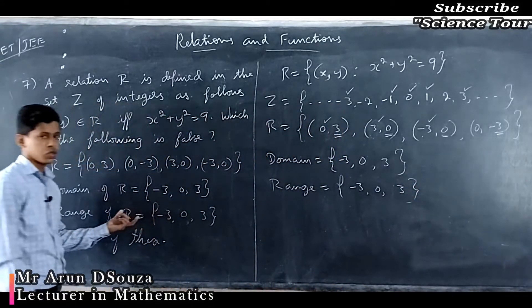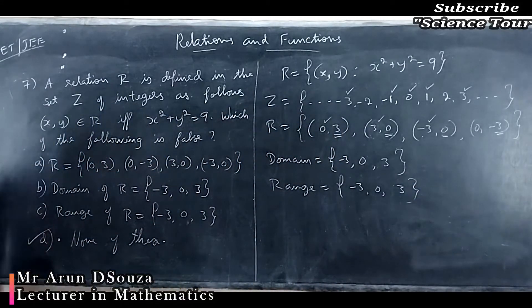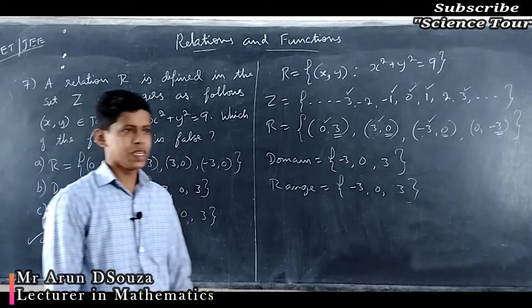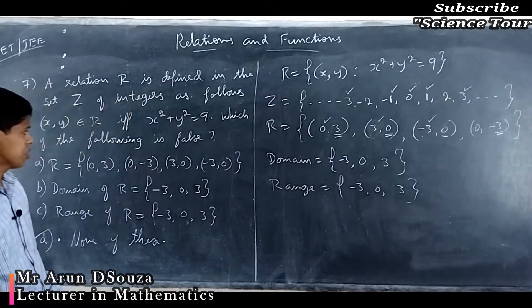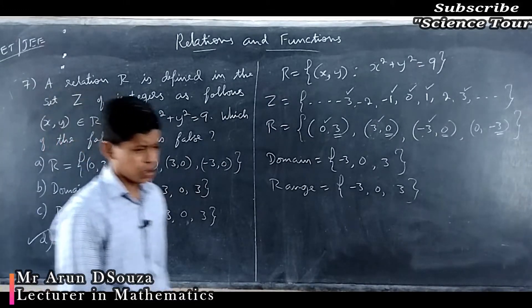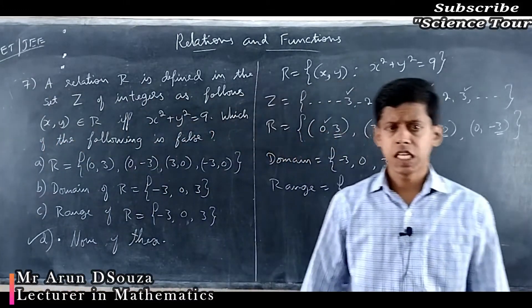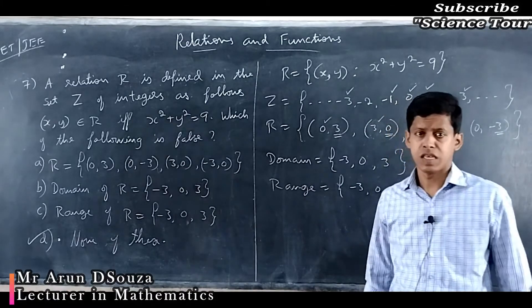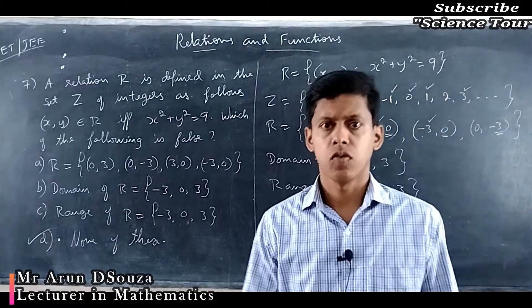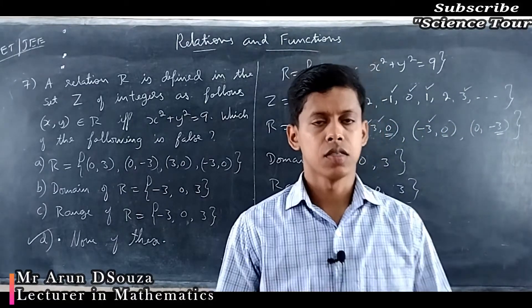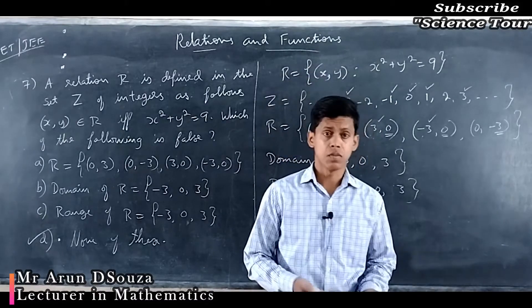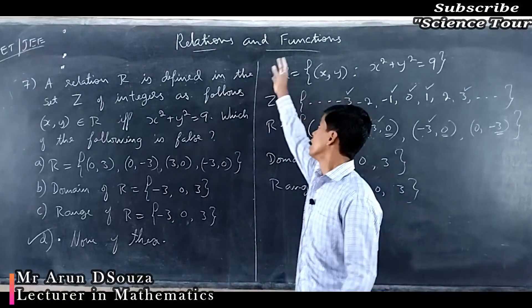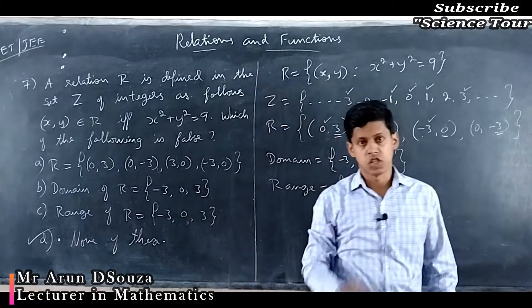Therefore, which is false? None of these — all three are true. With these two questions I hope you have understood how to write a relation in roster form and how to identify domain and range. Next class we will solve more examples of relations and then start with functions.